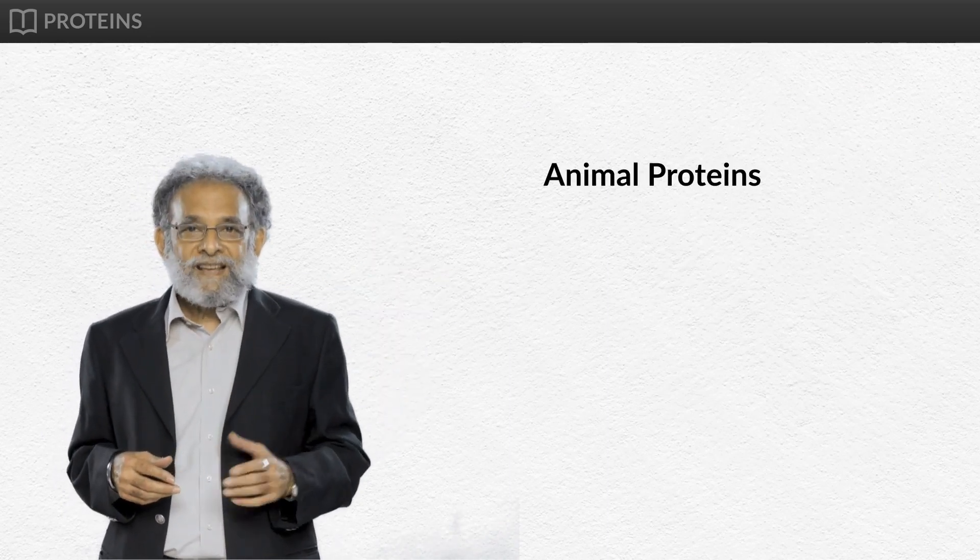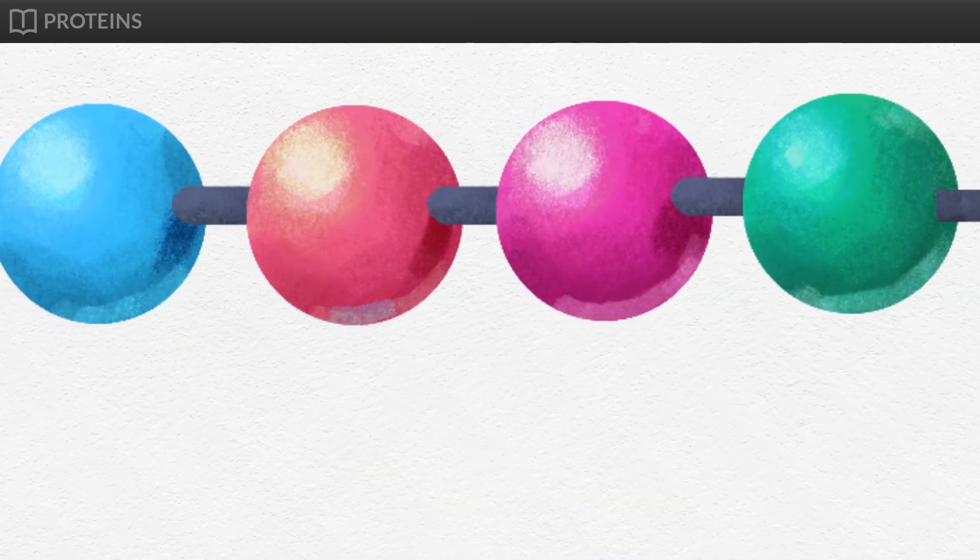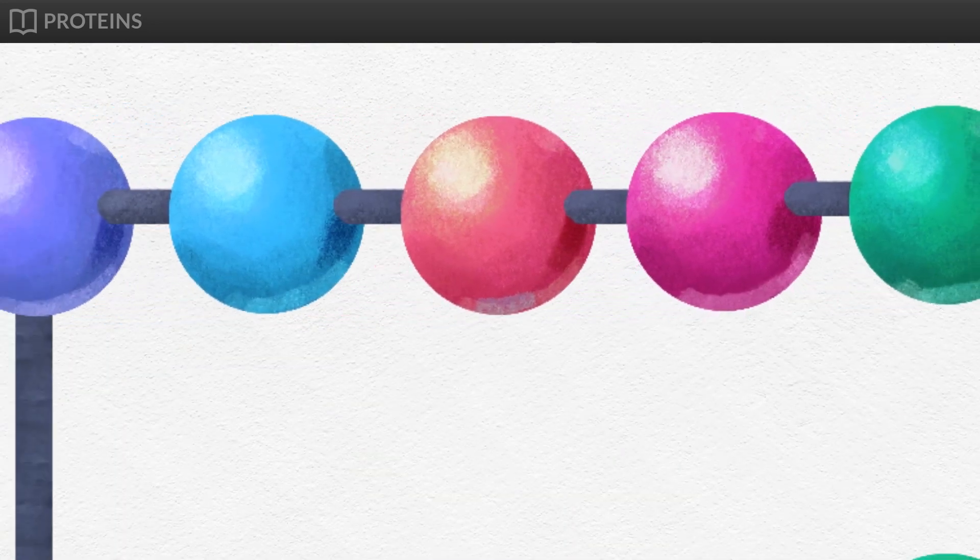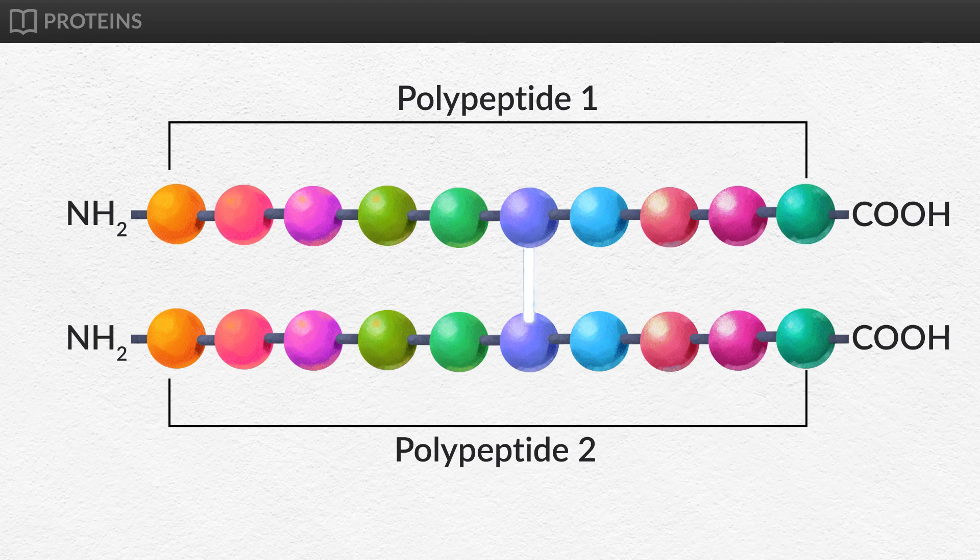Now let's know more about the animal proteins, its function and structure. Proteins are large-sized macromolecules having one or more polypeptides. Polypeptide is a linear chain of amino acids linked by peptide bonds.